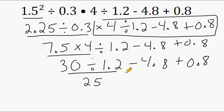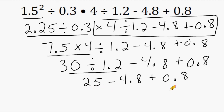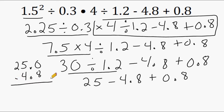Now that we've finished this part of our expression, we're going to bring down the minus 4.8 and the plus 0.8. When all you have remaining in your expression are addition and subtraction signs, you just do those in order of appearance from left to right. So we're going to start with 25 minus 4.8. We write 25 as 25.0 and subtract 4.8, lining up the decimals. We drop our decimal straight down, turn the 0 into a 10 and borrow one from the 5, which is now 4. 8 subtracted from 10 is 2, 4 minus 4 is 0, and 2 minus nothing is 2.